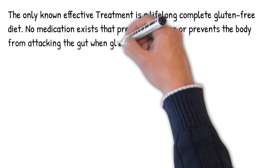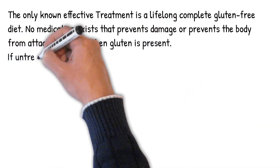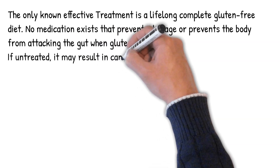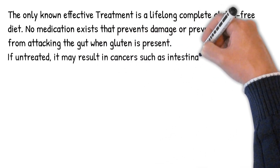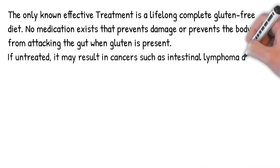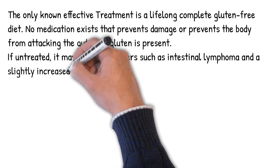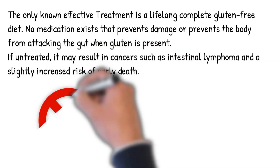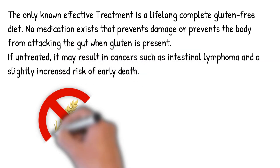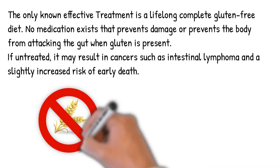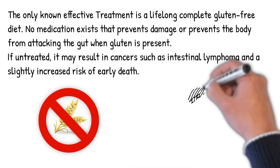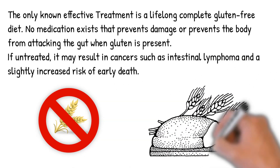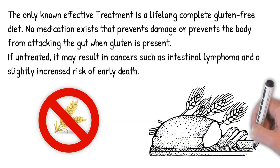No medication exists that prevents damage or prevents the body from attacking the gut when gluten is present. Intestinal damage begins to heal within weeks of gluten being removed from the diet, and antibody levels decline over months. If untreated, celiac disease may result in cancers such as intestinal lymphoma and a slightly increased risk of early death.